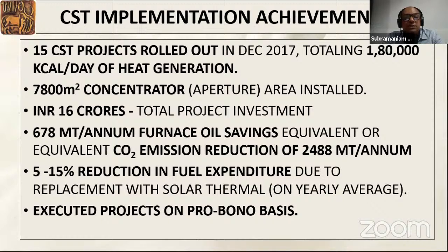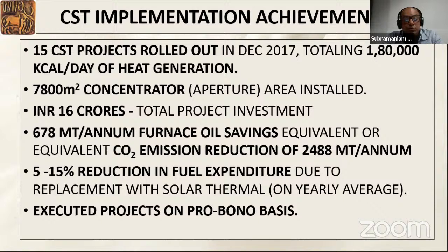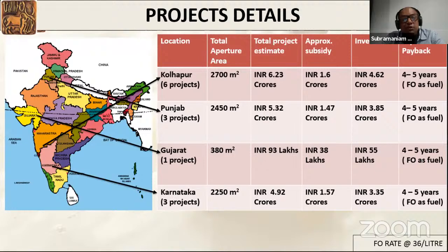In 15 projects completed in 2017, we added around 180,000 kilocalories per day of heat generation, with around 8,000 square meters of concentrated area installed. Total investment was around 16 crores, with equivalent furnace oil savings of 678 metric tons per annum and equivalent CO2 emission reduction of 2,488 metric tons. Installations showed a 5 to 15 percent reduction in fuel expenditure due to solar thermal intervention. NDDB did all 15 projects on a pro bono basis.